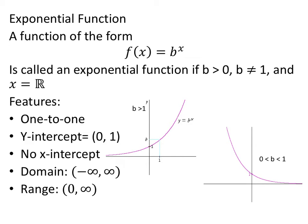But this part right here is pretty important that b is greater than 0, because if it were negative, then your graph is going to be skipping around all over the place.